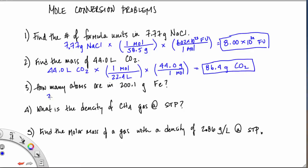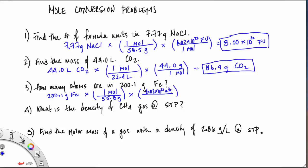In problem number three, we're starting with 200.1 grams of iron and want to find atoms of iron. Again, we have to convert to moles first — divide by the molar mass of iron, which is 55.8 grams per mole. Atoms is the representative particle of iron since iron is an element, so there are 6.02×10²³ atoms in one mole. The problem is 200.1 divided by 55.8 times 6.02×10²³, giving 2.159×10²⁴ atoms.